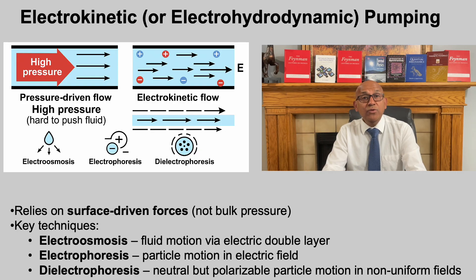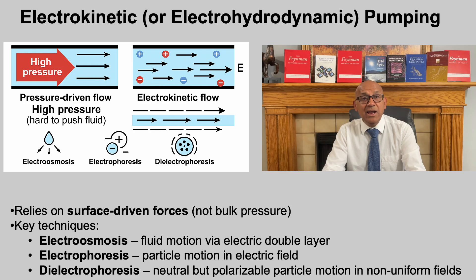In microfluidics and nanofluidics, pressure-driven flow becomes impractical because the pressure needed rises dramatically as channels get smaller. Instead, engineers use electrohydrodynamic pumping, which relies on surface-driven forces rather than bulk pressure. The most common techniques include: electroosmosis, where an electric field moves ions near a charged surface and drags fluid along; electrophoresis, where charged particles like DNA or proteins are moved by an electric field; and dielectrophoresis, where neutral but polarizable particles are manipulated by non-uniform electric fields. These approaches make it possible to pump and control fluid at very small scales where traditional pumps cannot work.